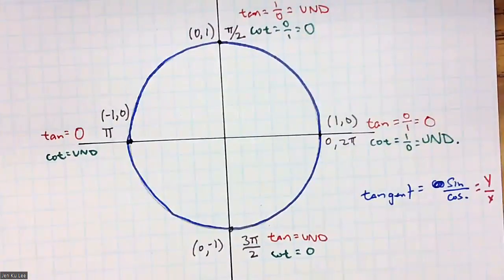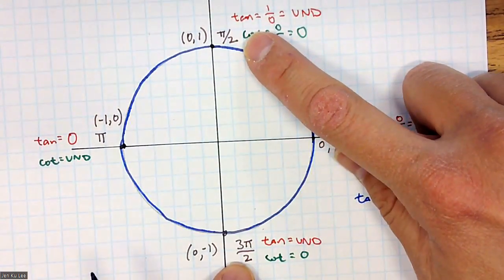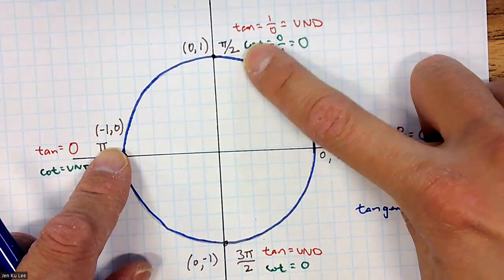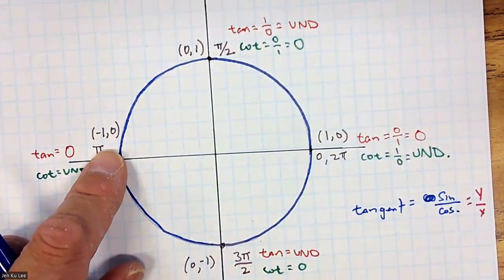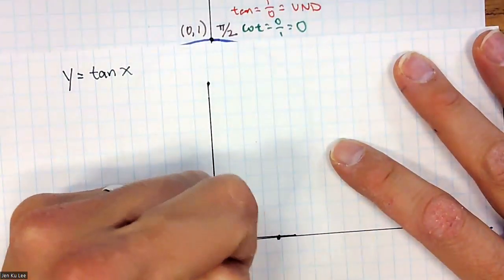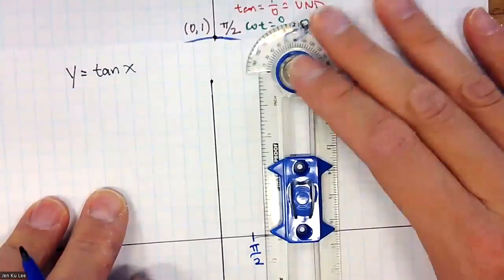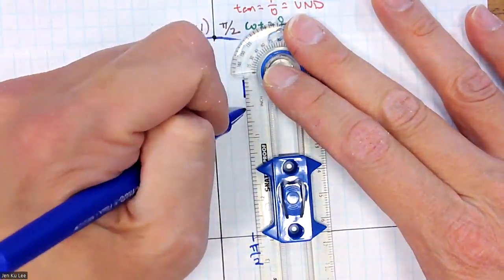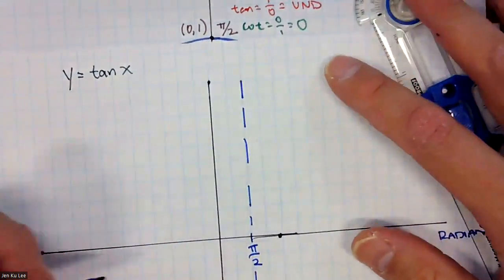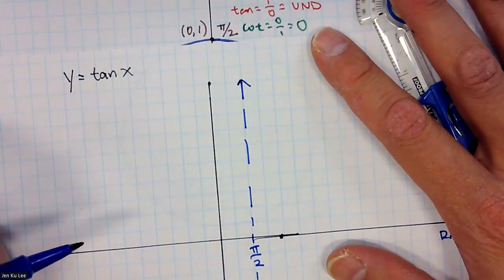Looking at the unit circle, tangent is undefined at π/2, which means there's going to be a vertical asymptote at π/2. At π/2 we draw a vertical line going straight up and down, signifying the graph cannot go over this line — there's no value there. Similarly, at −π/2 there's going to be a vertical asymptote.